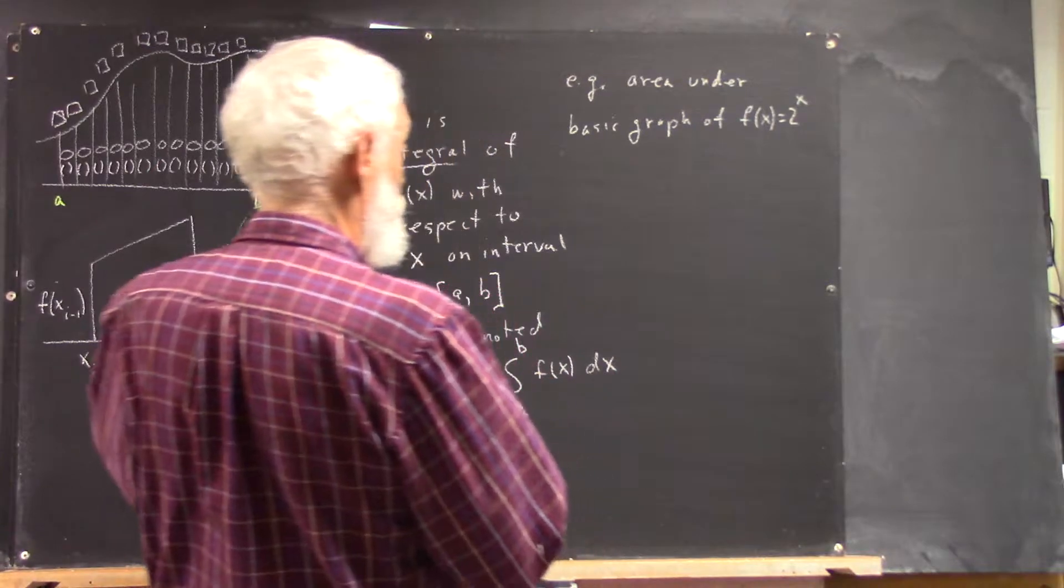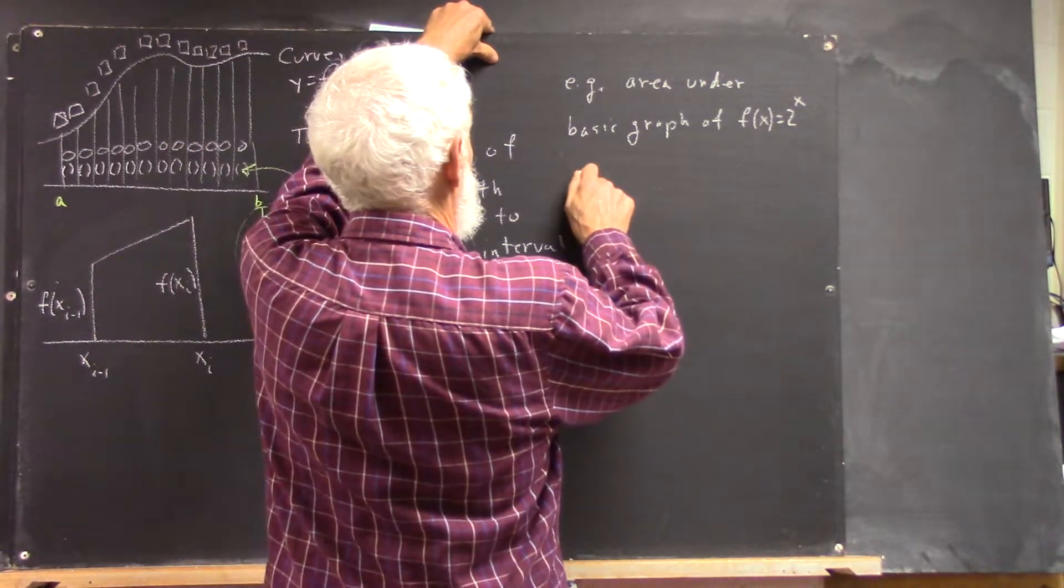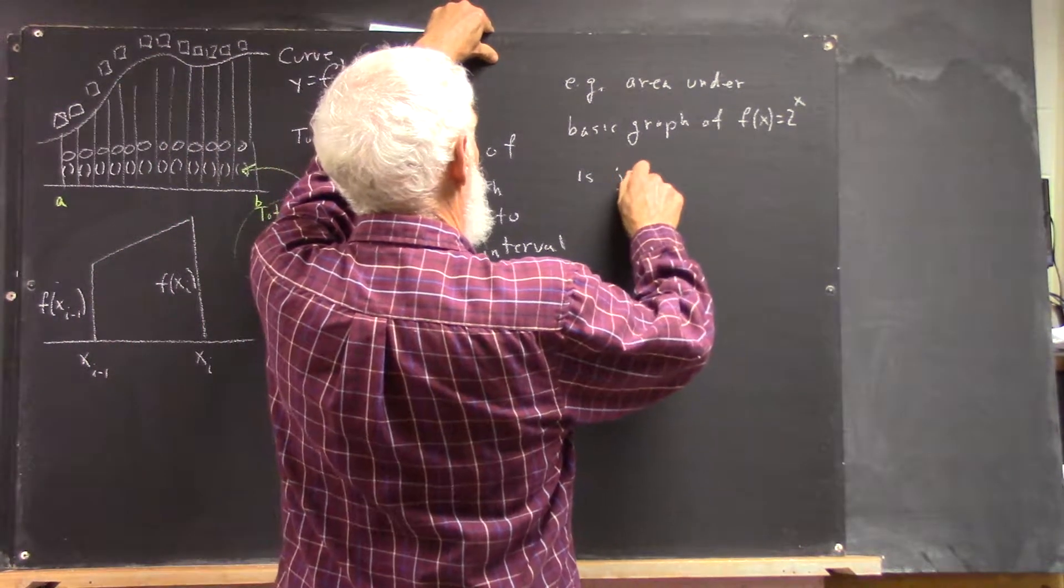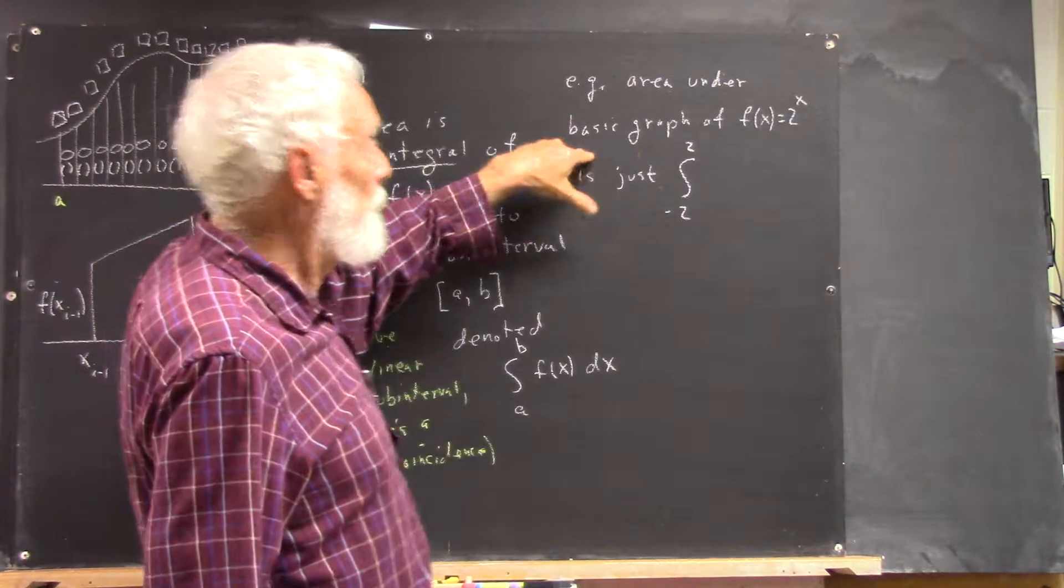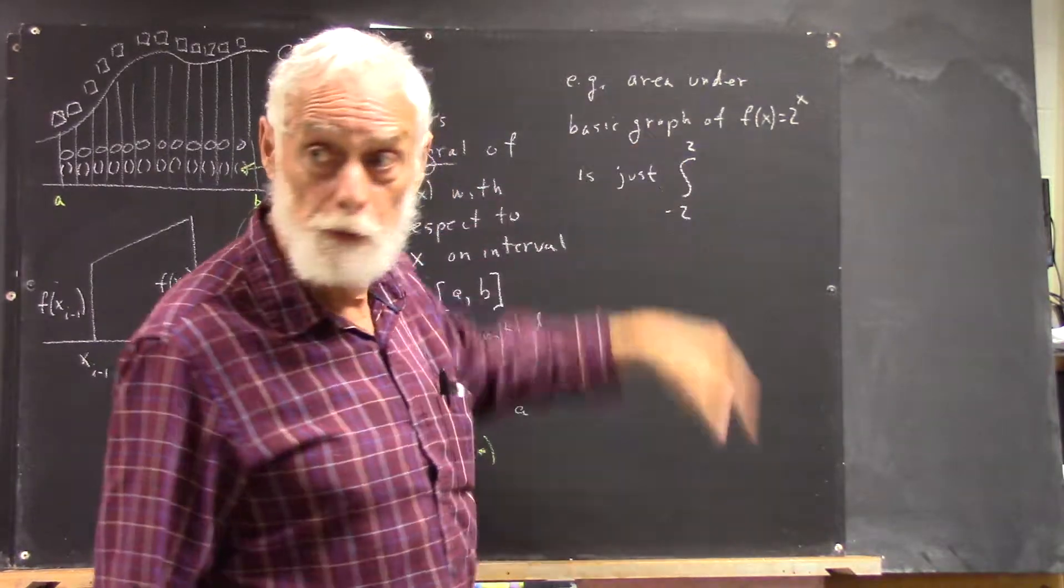Area under this thing is just the integral from -2 to 2. When I say the basic graph, it goes from -2 to 2.